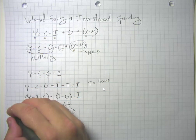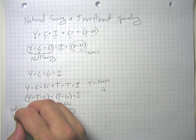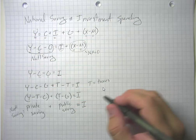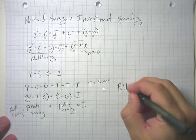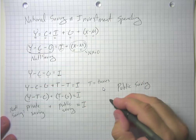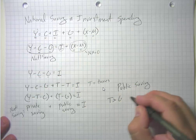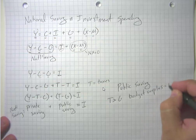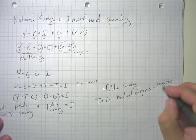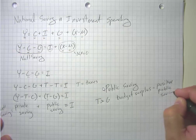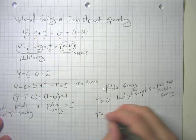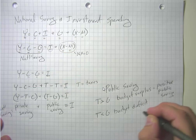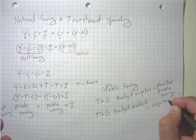So national saving equals private sector saving plus public saving, and that has to equal investment spending. If tax revenue is greater than government spending, then we have a budget surplus, which is the same as positive public saving. On the other hand, if tax revenue is less than government spending, then the government has a budget deficit, which is the same as negative public saving.